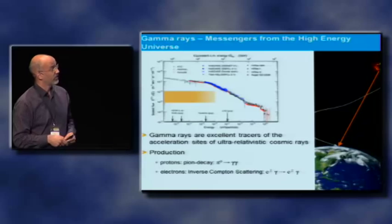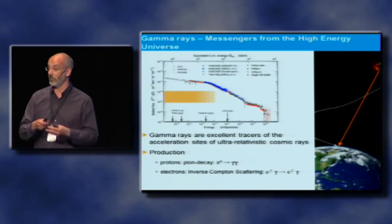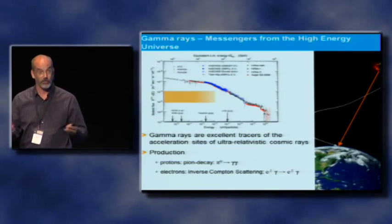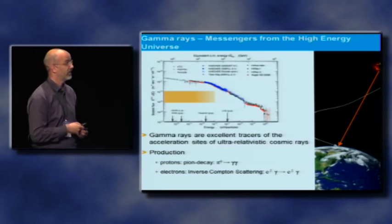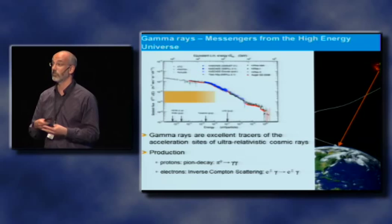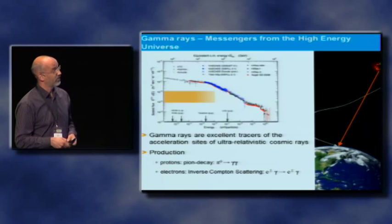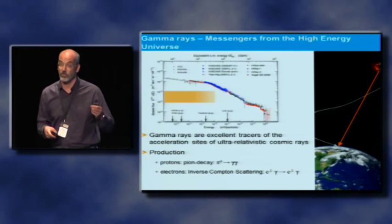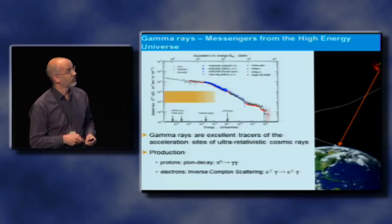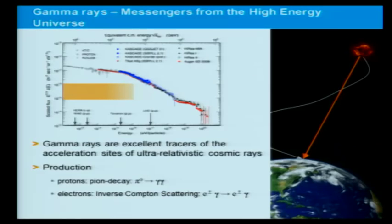For high-energy electrons, there's inverse Compton scattering. You take high-energy electrons and an ambient photon field — at least the cosmic microwave background radiation, infrared background radiation, light from stars — and you can upscatter these photons to gamma rays. This allows us to detect these sources. The advantage is that you can use photons to do real astronomy and map where they are coming from. The disadvantage is that there are two production mechanisms, but we want to find sources of hadronic cosmic rays.